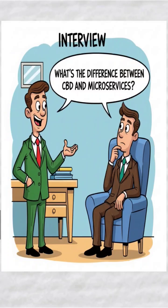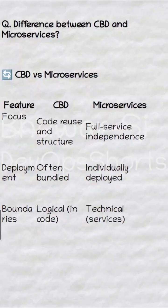In CBD there is code reuse, whereas microservices are a completely independent service. CBD is particularly well suited for large software projects, whereas microservices are designed to perform a single well-defined function within a larger application.